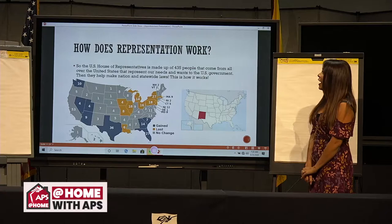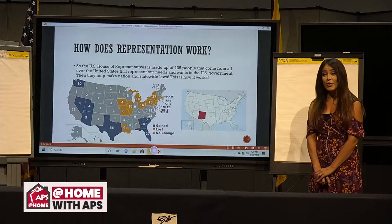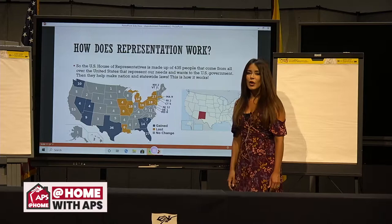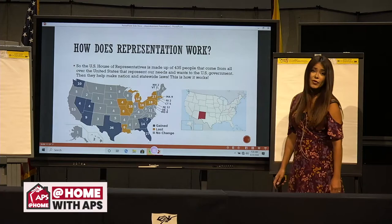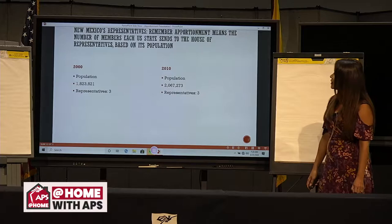Here's how it works: New Mexico has three representatives that go and help make our laws for our country. Remember, apportionment means the number of members each U.S. state sends to the House of Representatives based on its population.